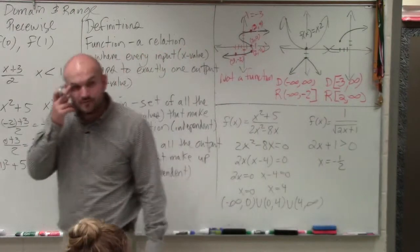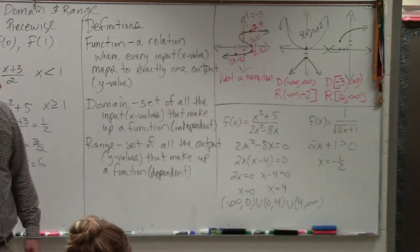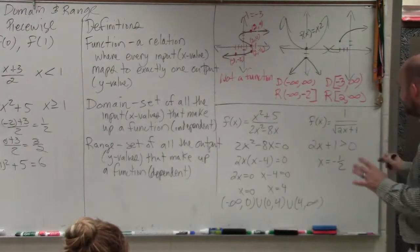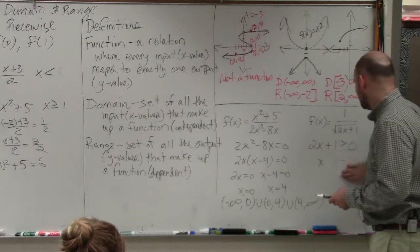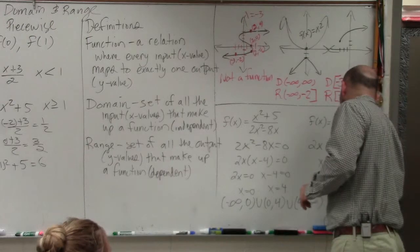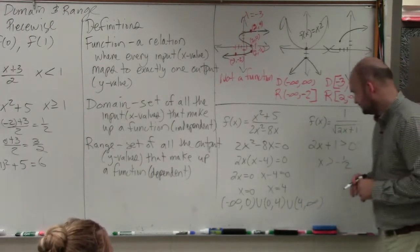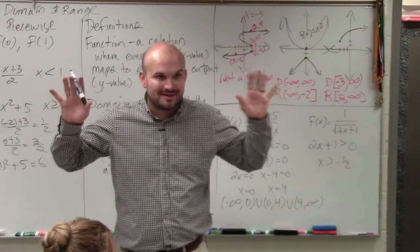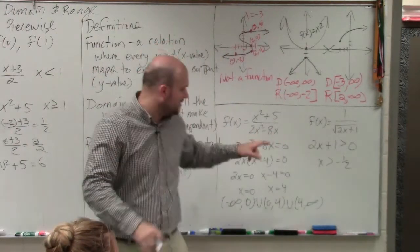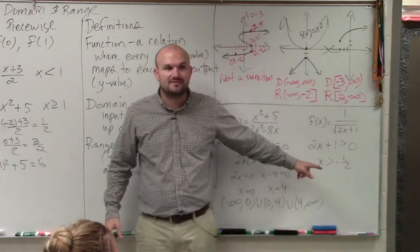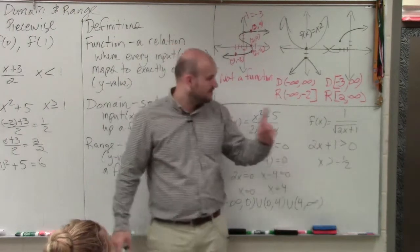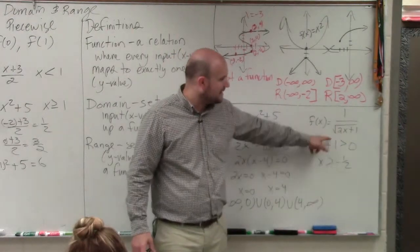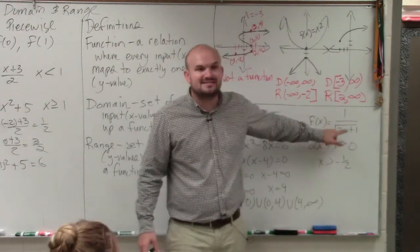So x has to be greater than negative 1 half. Every single number in the whole wide world is a part of the domain, except x has to be greater than negative 1 half, because that will make that quantity 0. Can't equal 0.